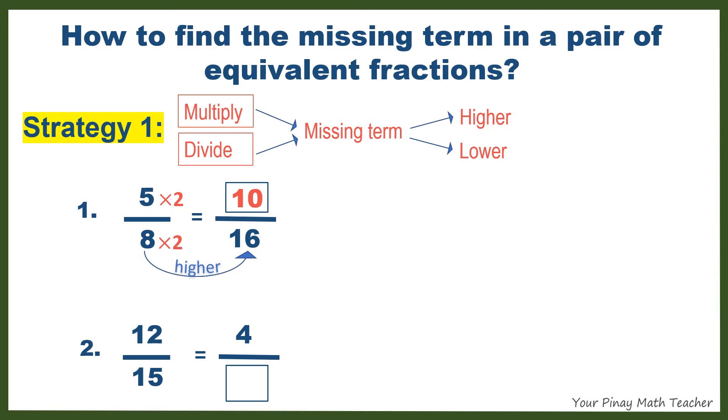Number 2. 12 gets lower to 4. This means that you have to divide 12 by a certain number, which is 3, to get 4. If in case you don't think of 3 right away, you can also divide 12 by 4, which is 3. And then do the same with 15. Divide 15 by 3. So the missing term is 5.